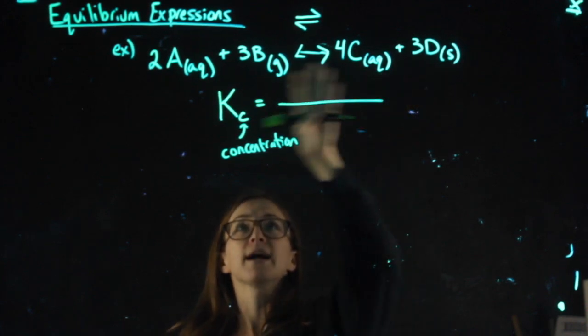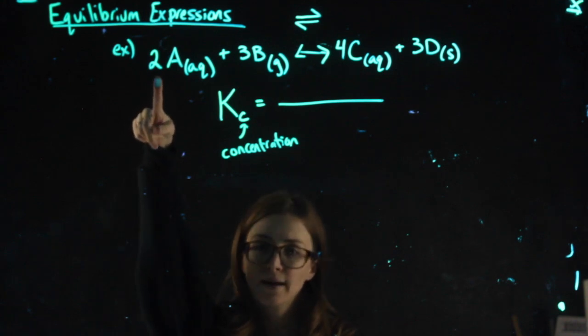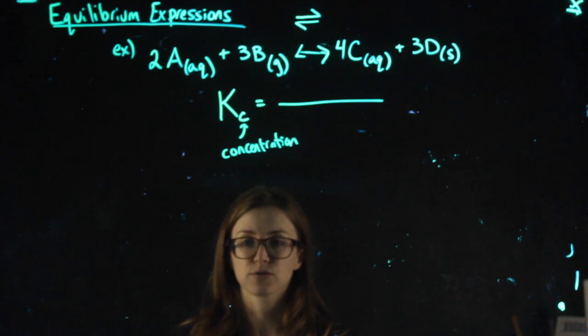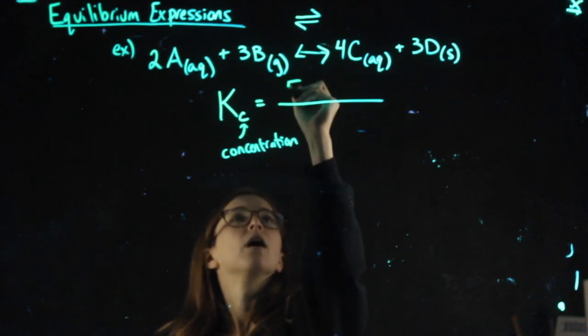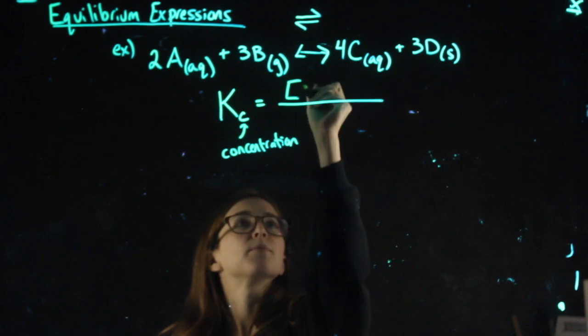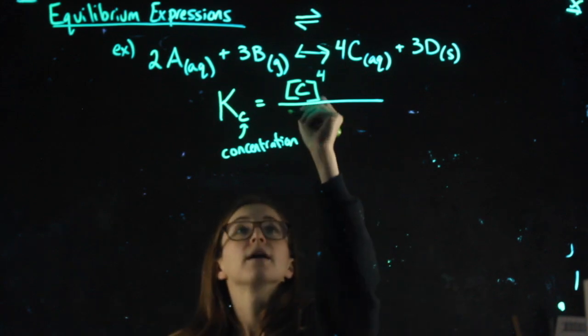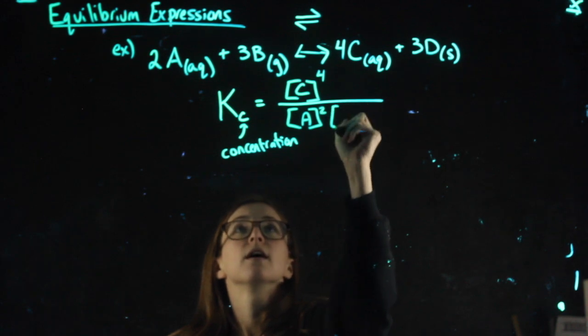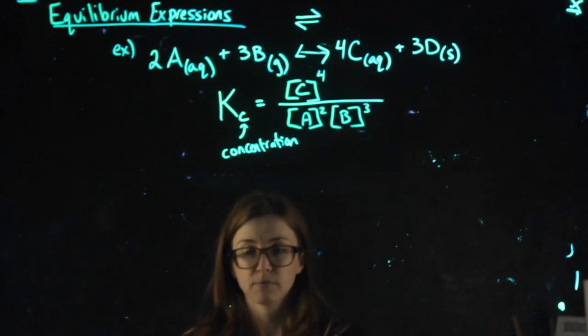And what I'm going to do is I'm going to write out what the equilibrium expression would be for this reaction. And while I'm doing that, see if you can figure out where I'm pulling different numbers and values from. Okay, it's always going to be a fraction. For this particular reaction, I would put C in brackets to the fourth power. On the bottom, I would put A in brackets squared, B in brackets cubed.